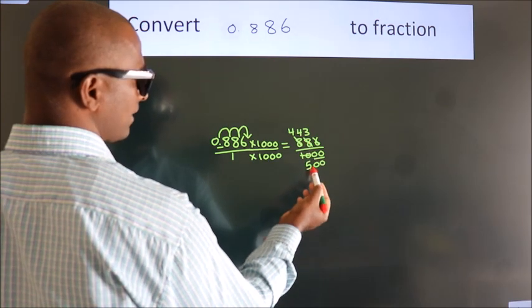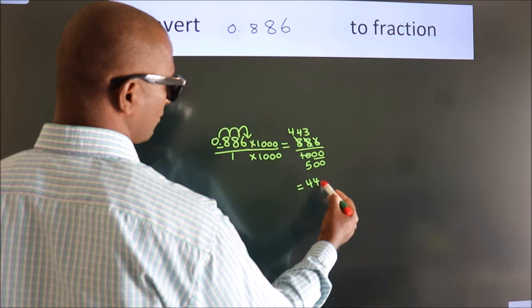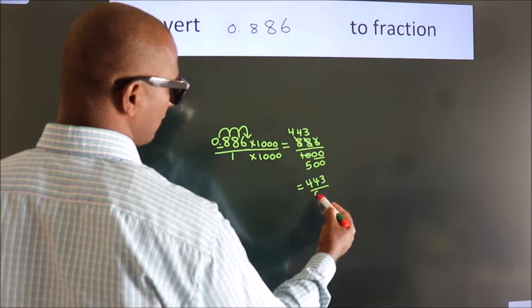Further cannot be simplified. So our fraction is 443 by 500.